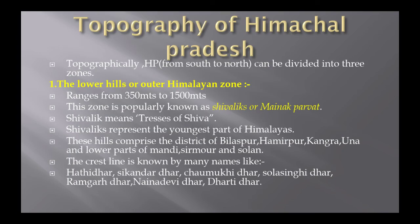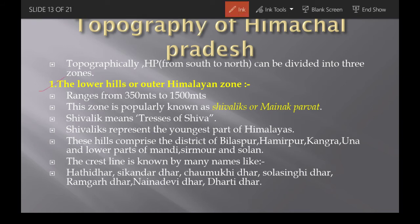Based on topography, HP is divided into zones. First is the Lower Hills / Outer Himalayan Zone, also called Shivaliks. In ancient times Shivaliks were called Mainak Parvat. The Shivaliks range from 350 to 1,500 meters. 'Shivalik' means 'traces of Shiva' — Shiva's locks. The Shivaliks are the youngest part of the Himalayas. They are found in Bilaspur, Hamirpur, Kangra, Una, lower parts of Mandi, and Sirmaur. Locally they are also known as Hatidar, Sikandardar, Chaumukhidar, Solasinghidar, Ramgardar, Naindevidar, and Dhartidar.